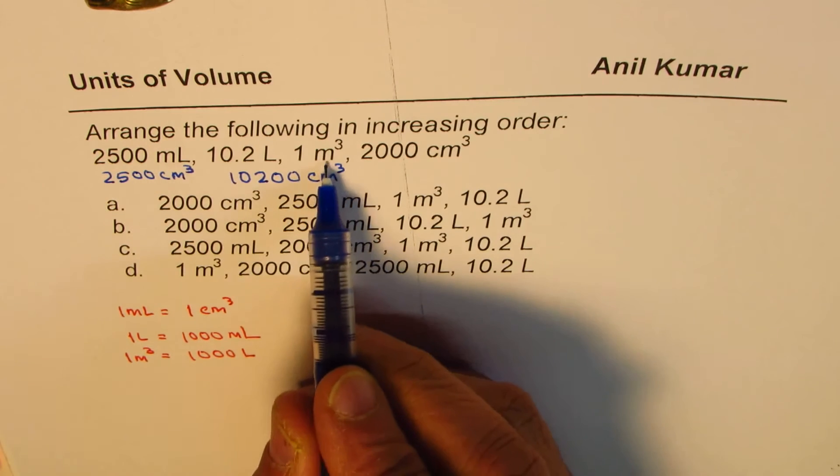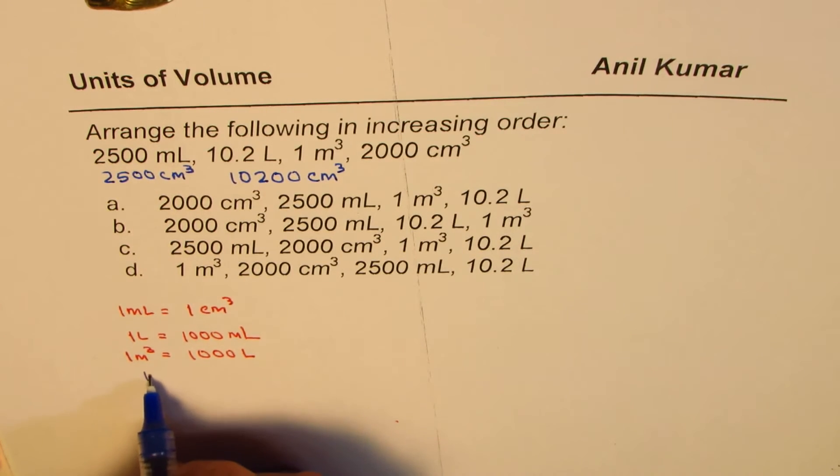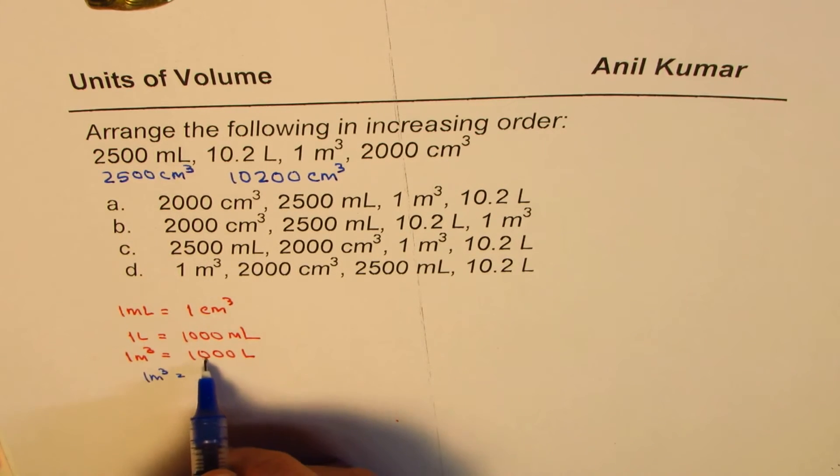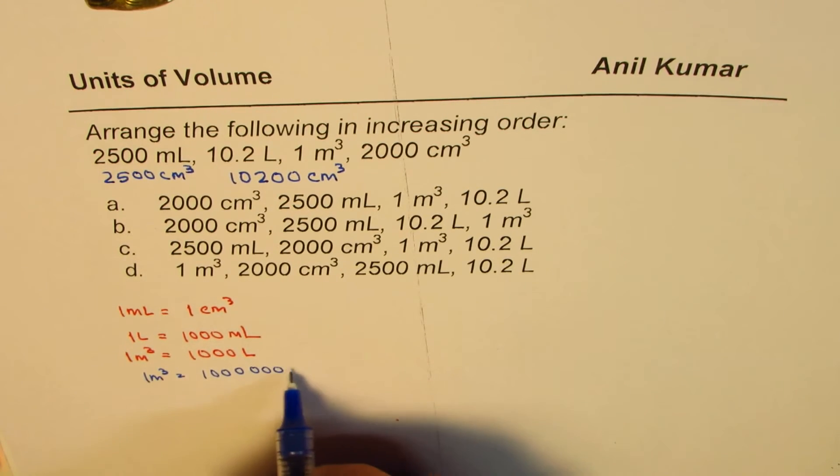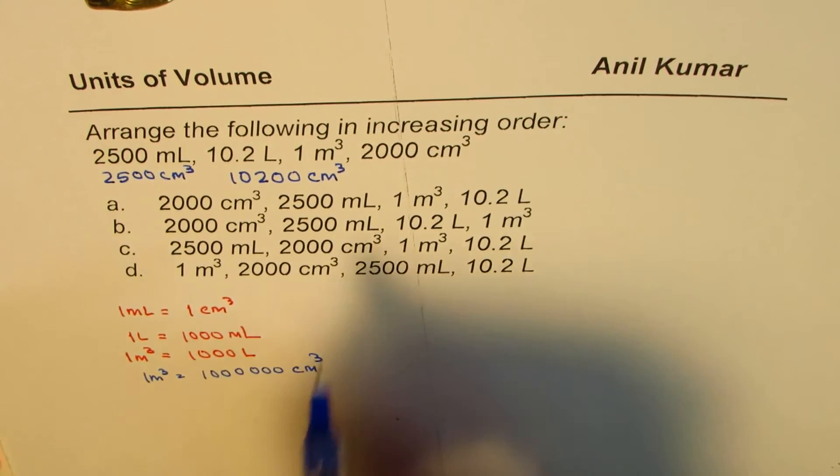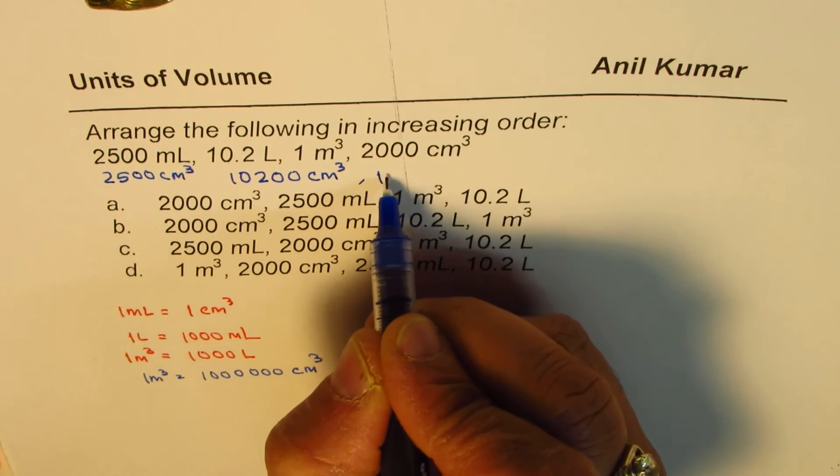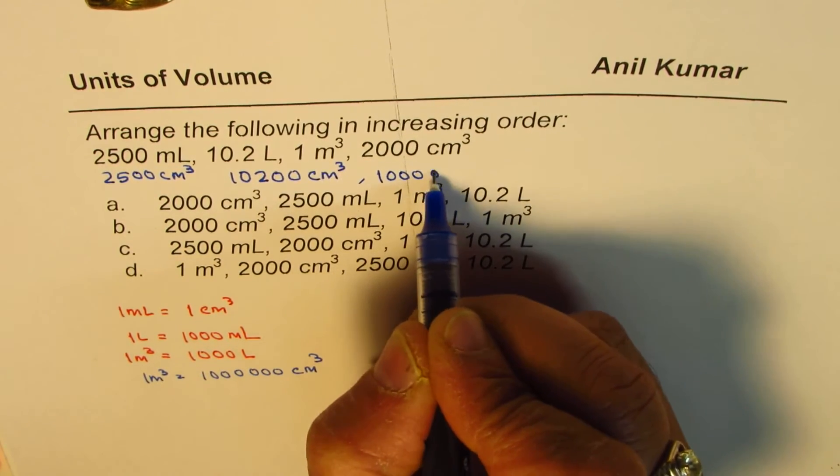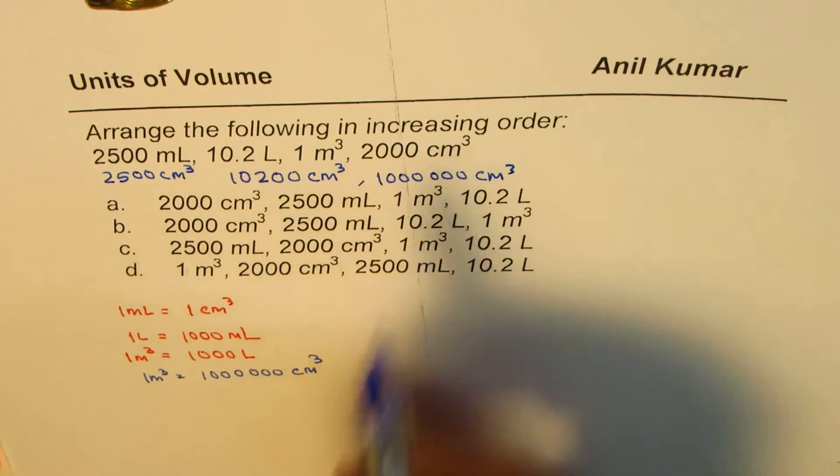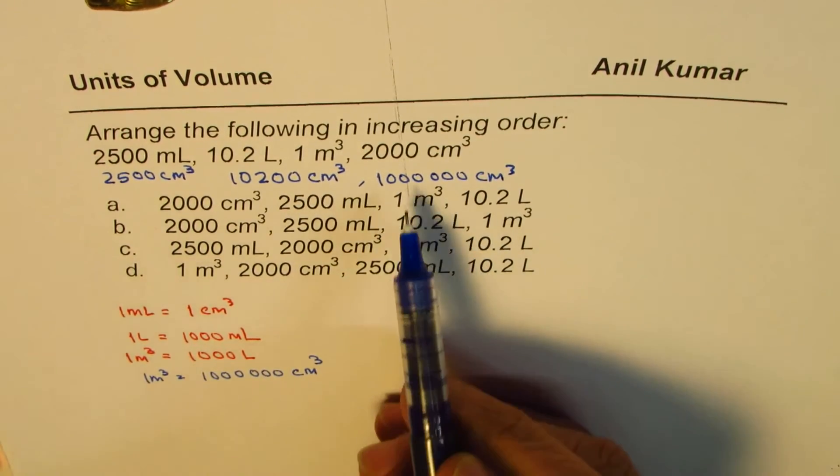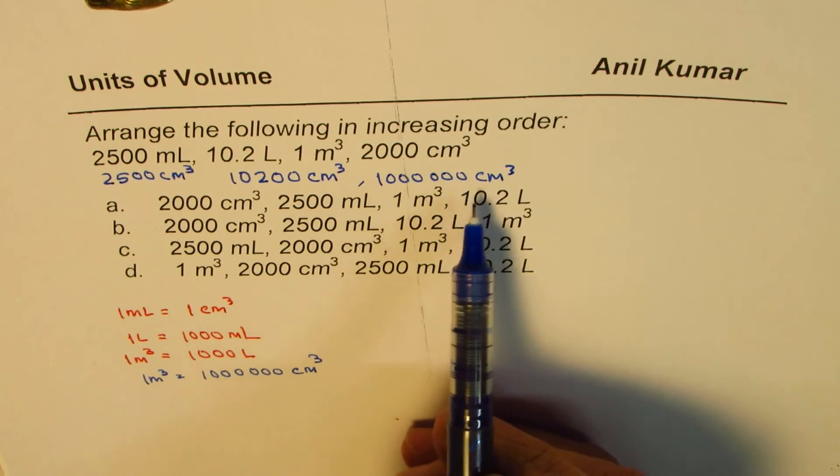As far as the meter cube is concerned, 1 meter cube is equals to 1000 liters. That means it is 1,000,000 centimeter cube. And this one is 2000 centimeter cube. Now that should be very clear.